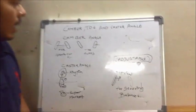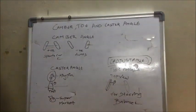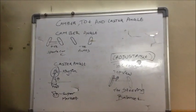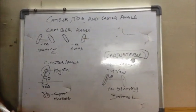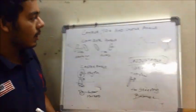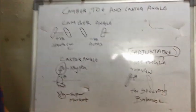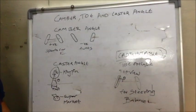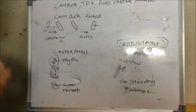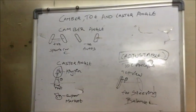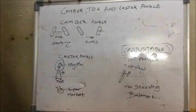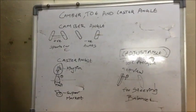Today I am going to talk about caster, camber and toe angles. So let's start with the camber angle. What are these angles? These angles play a very important role in the automobile industry. These angles are related to the angles of the tires which I have shown you here and I am going to explain everything in detail.